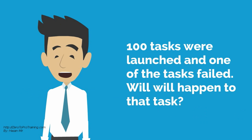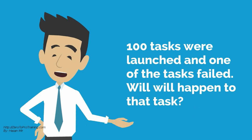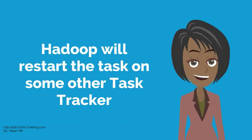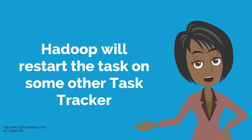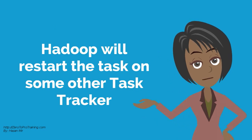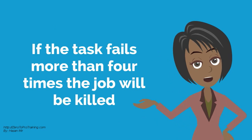Let's say 100 tasks were launched by Hadoop for a job and one of the tasks failed — what will happen to the task? Hadoop will restart the task on some other TaskTracker. If the task fails more than four times, Hadoop will kill the job. The default setting could be changed.